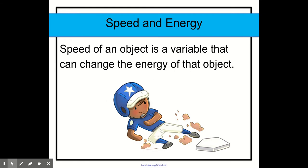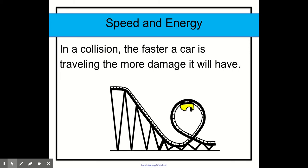Speed of an object is a variable that can change the energy of that object. In a collision, the faster a car is traveling, the more damage it will have.